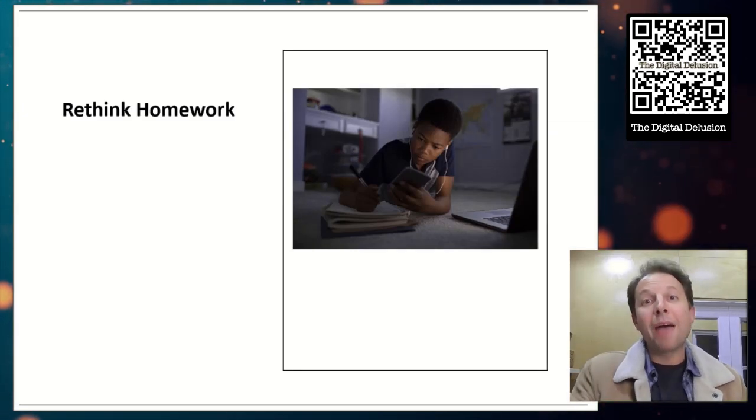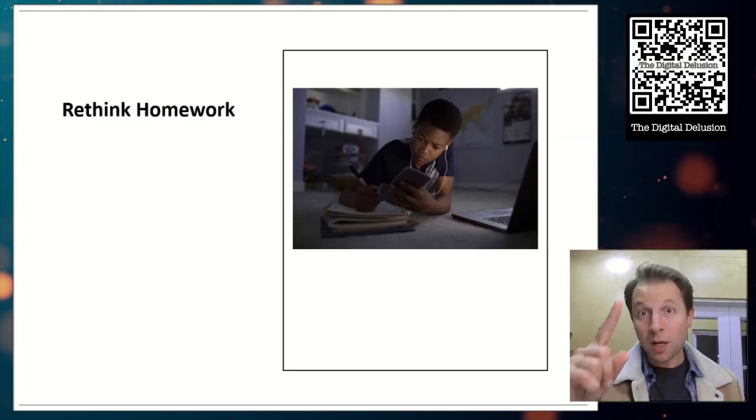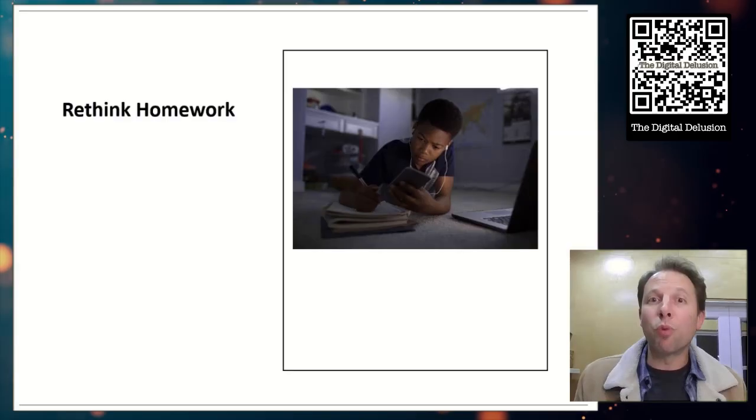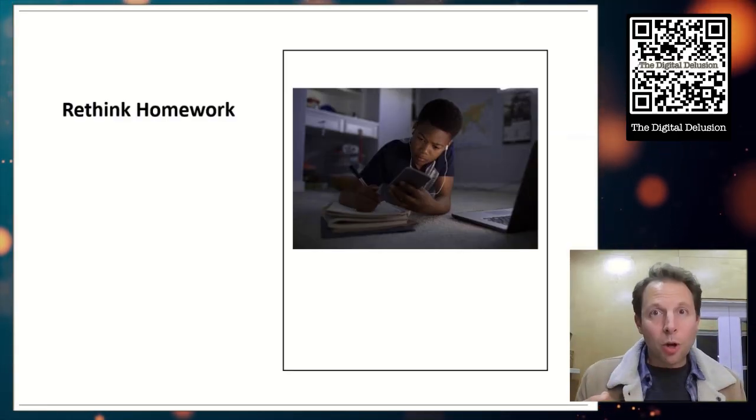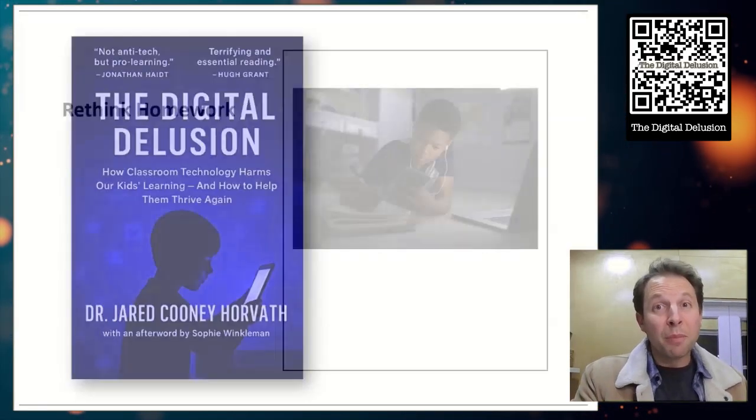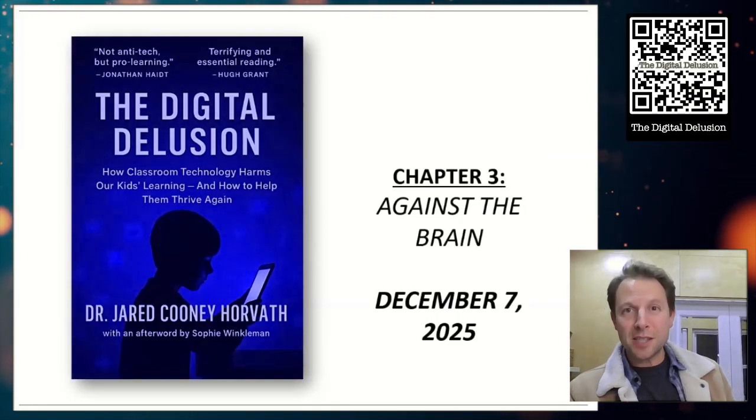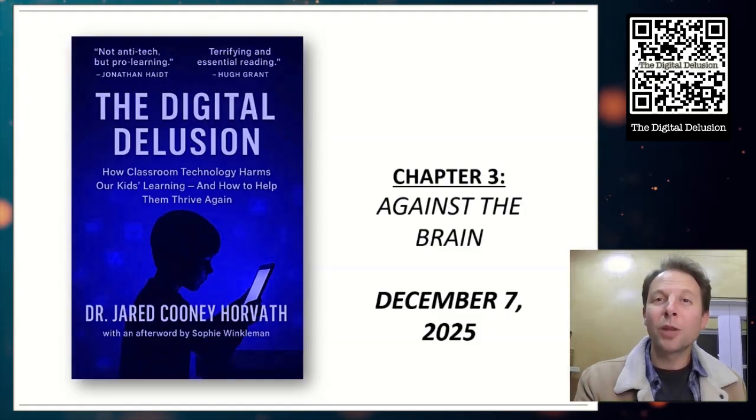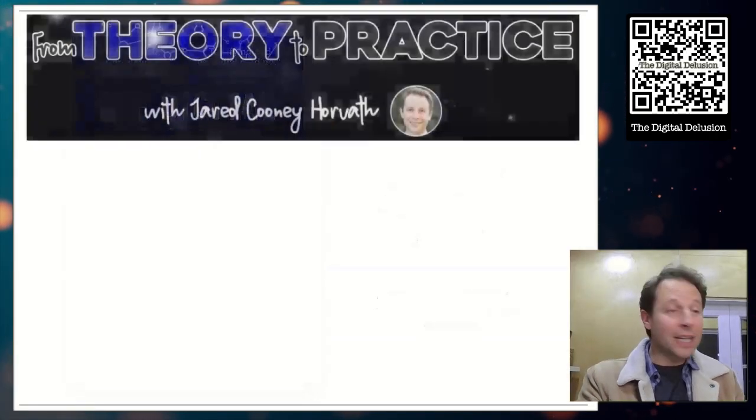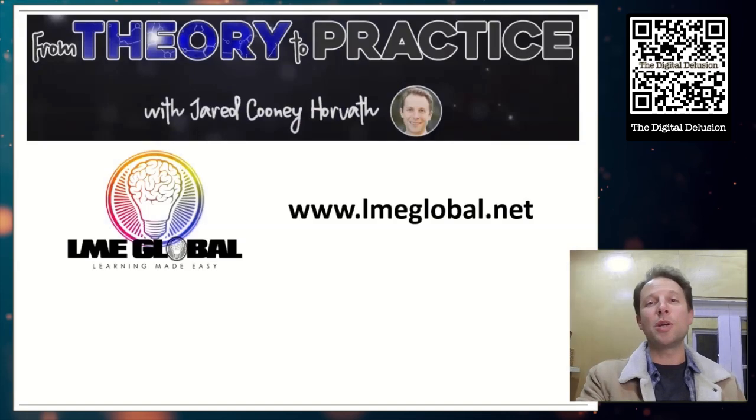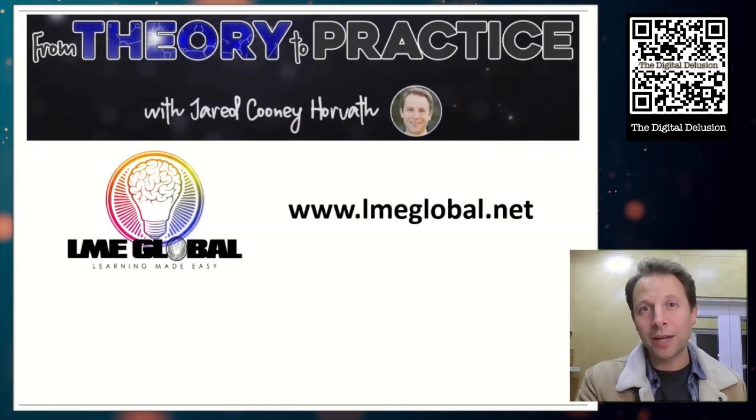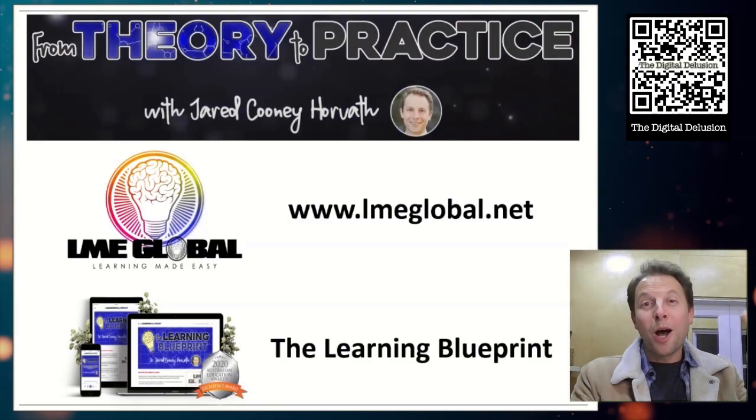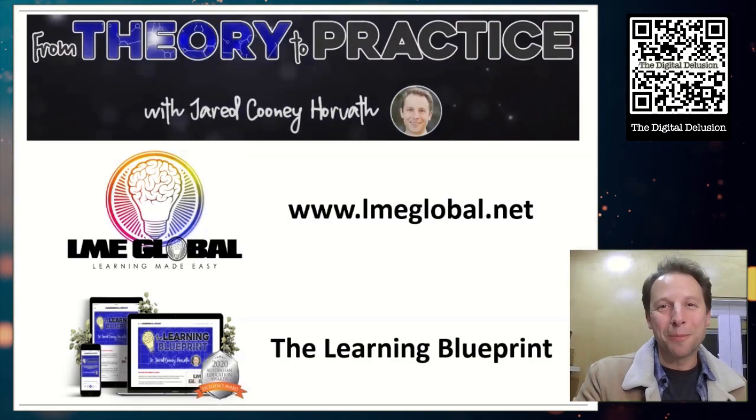Now if you're interested in diving into this a bit more, I have two other videos on this topic. One specifically about homework. How much homework is too much per night? And the other one about this idea of worked examples. What are they? How can we embed them into homework to make analog homework even more effective? But that is chapter four from my new book, the digital delusion against the brain. That's where we take a look at mechanisms. The book comes out on December 7th, 2025. Otherwise, thank you all so much for watching. If you'd like to dive into more topics, you can take a look for us online at www.lmeglobal.net or you can take a look at our award-winning science of learning course called the learning blueprint for both teachers and students. Otherwise thank you so much. And I'll see y'all at the next one. Bye everyone.